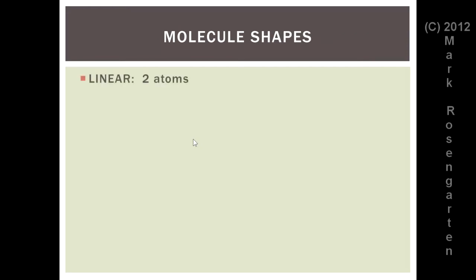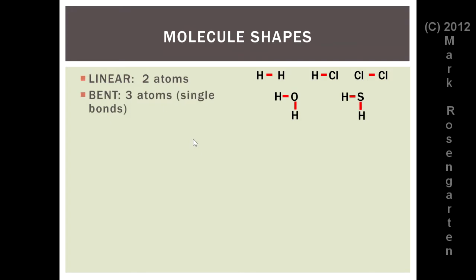Linear consists of two atoms. For example, the diatomic molecules of hydrogen and chlorine, and the binary compound hydrogen chloride. Bent molecules have three atoms, one in the center and one bent off to an angle with single bonds, for example in water and in hydrogen sulfide.